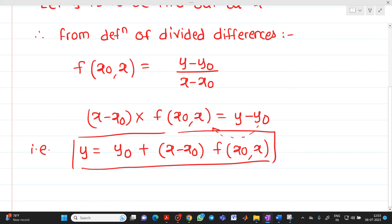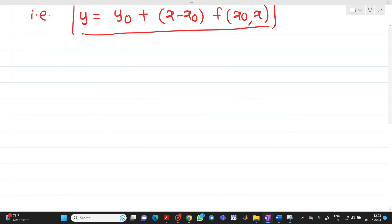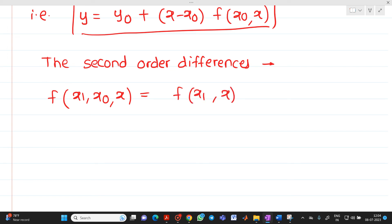Now, the second order differences are given by—let me write it as the second order differences. Again, for understanding these second order differences, you have to see that video. It will be f of x1 comma x0 comma x equal to f of x1 comma x minus f of x0 comma x whole divided by x minus x1.